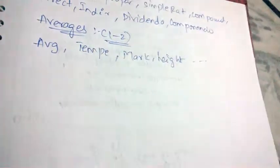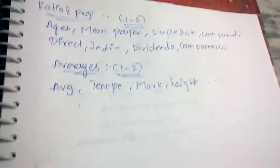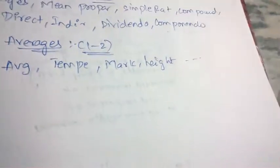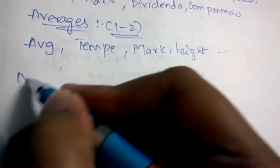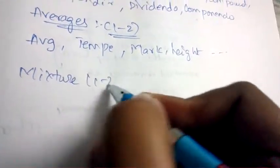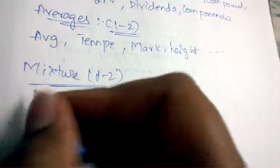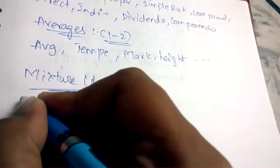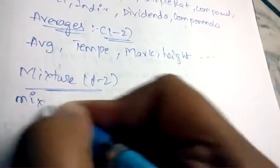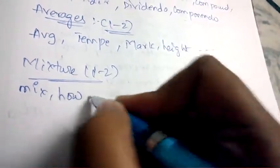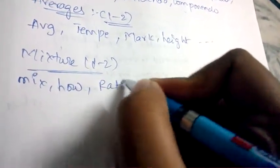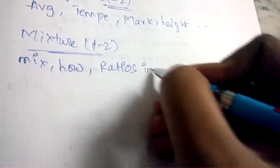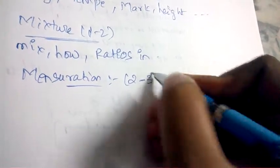Coming to Mixture Problems, the weightage is 1 to 2 marks. The topics covered are how to mix more than one entity and ratios of mixtures in a particular entity. These sorts of questions will be asked under this topic.